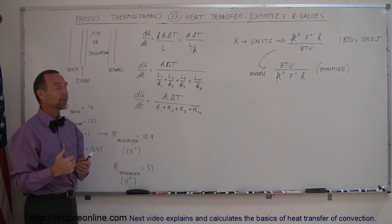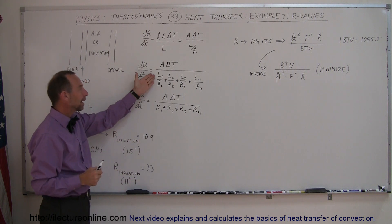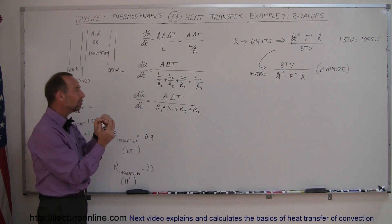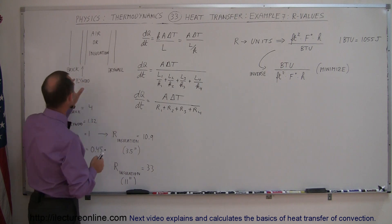Now, the R-values that we use are simply L divided by K. Notice that the L and the K are combined into a single value. That happens because we know typically the thickness of these things—for example,